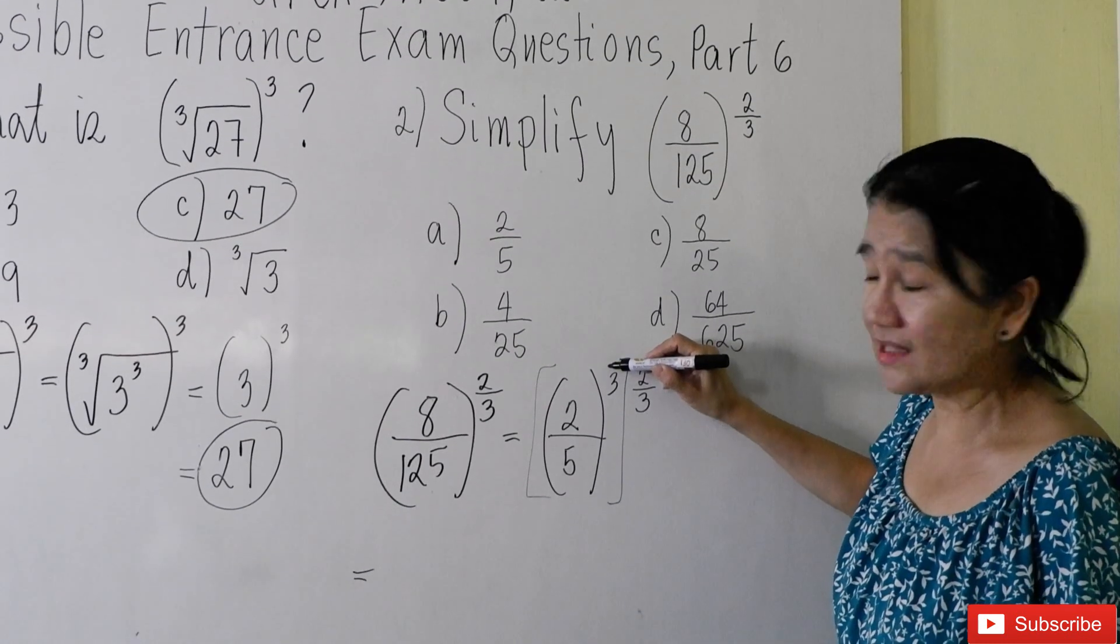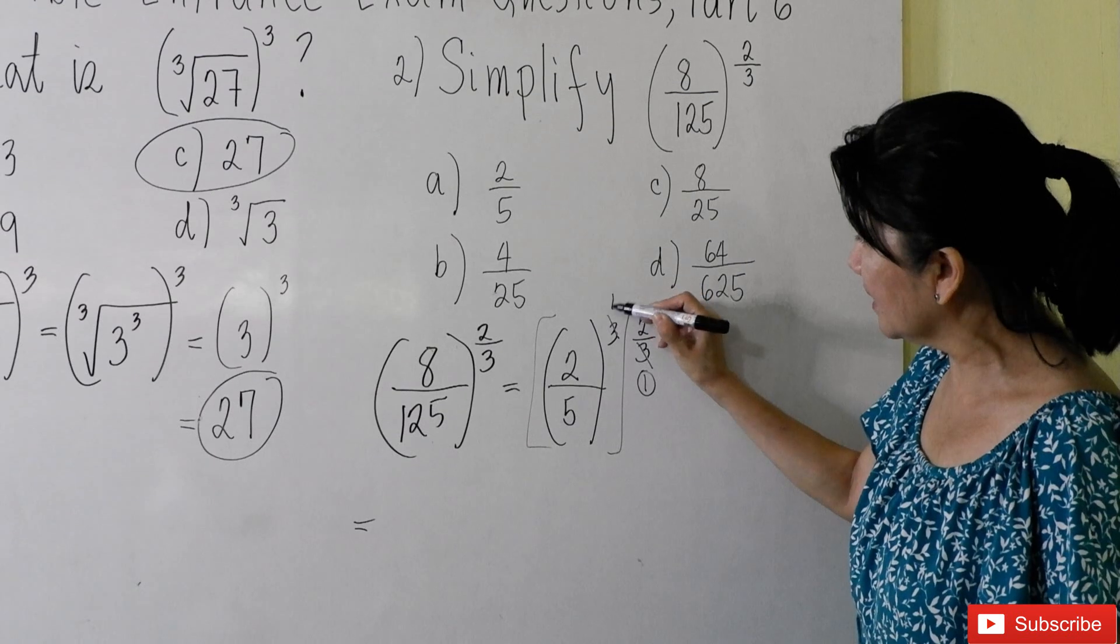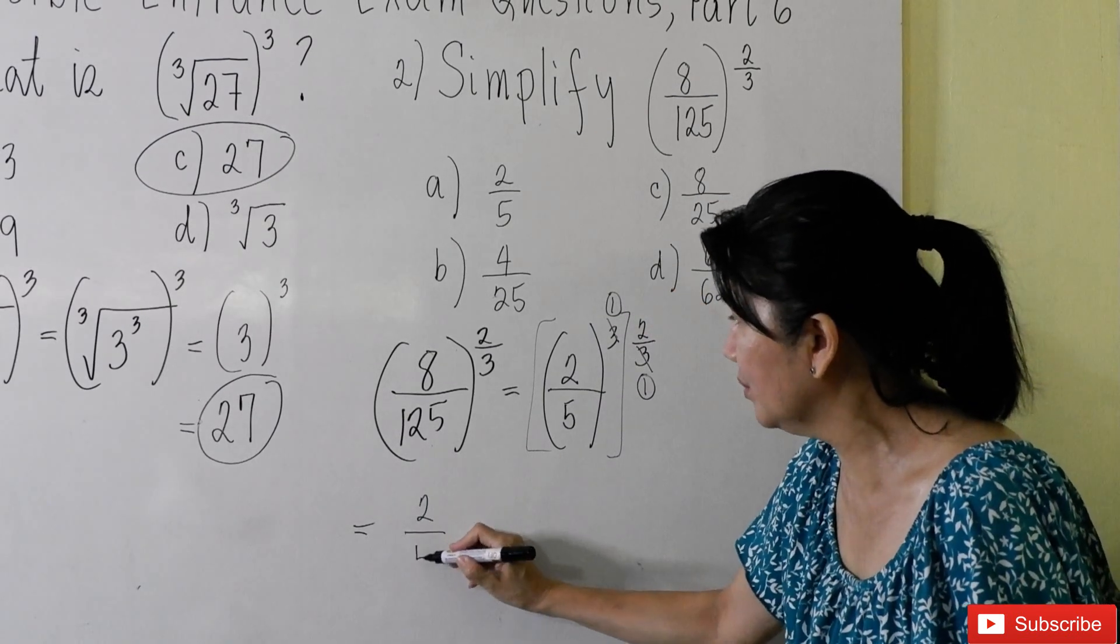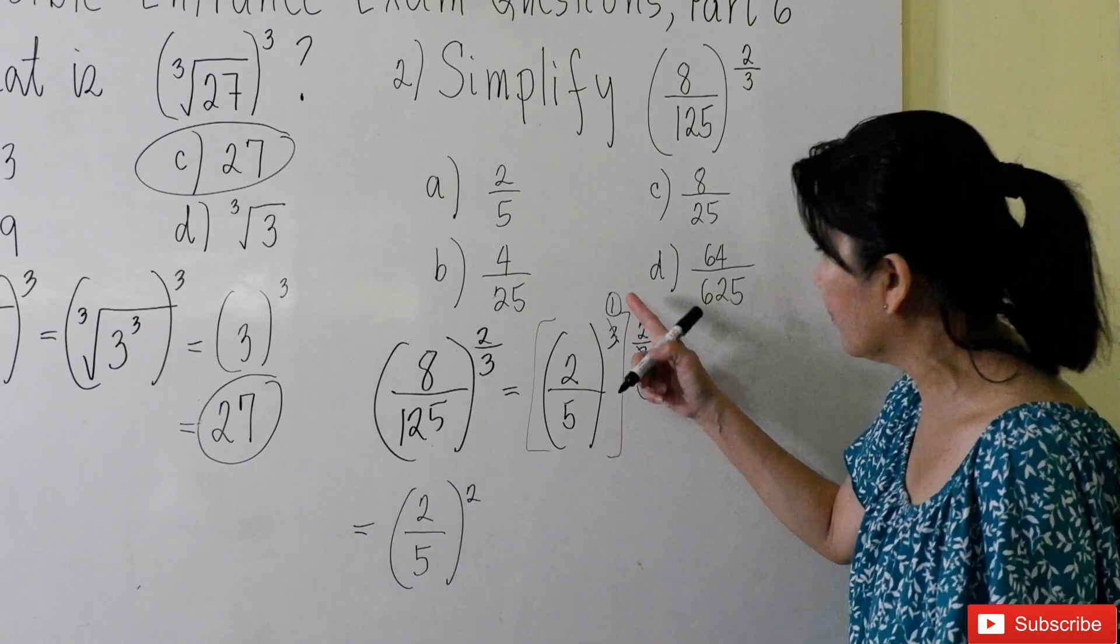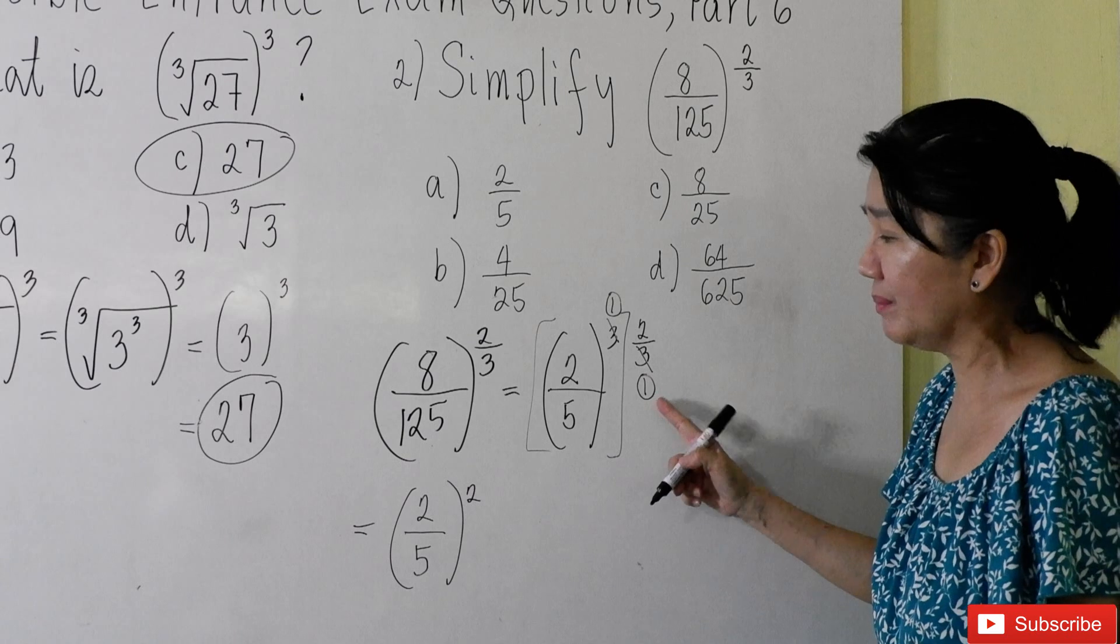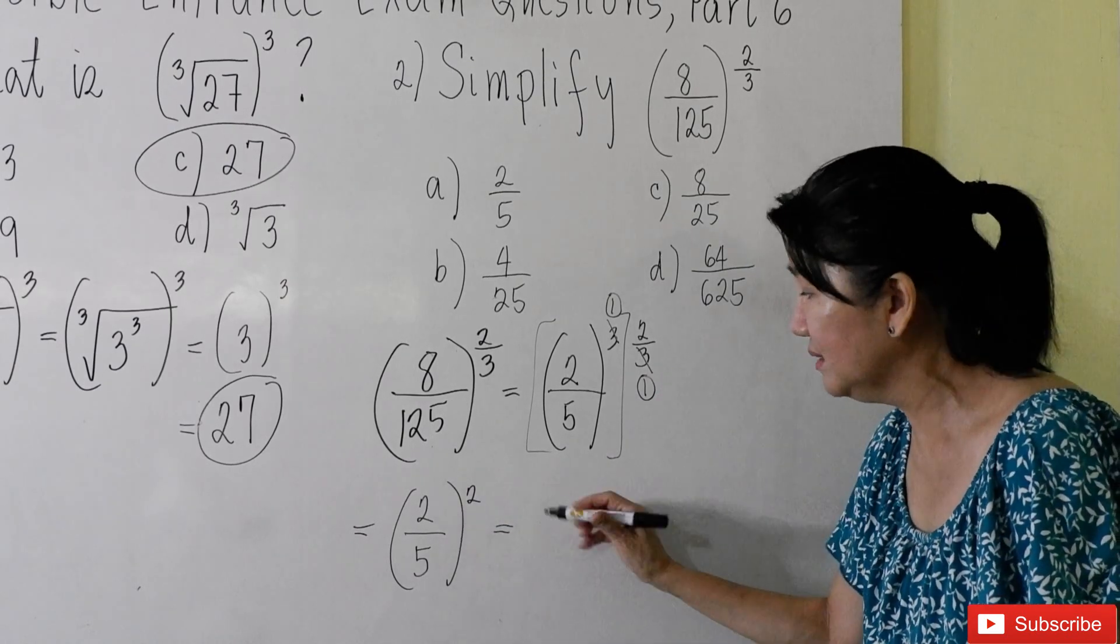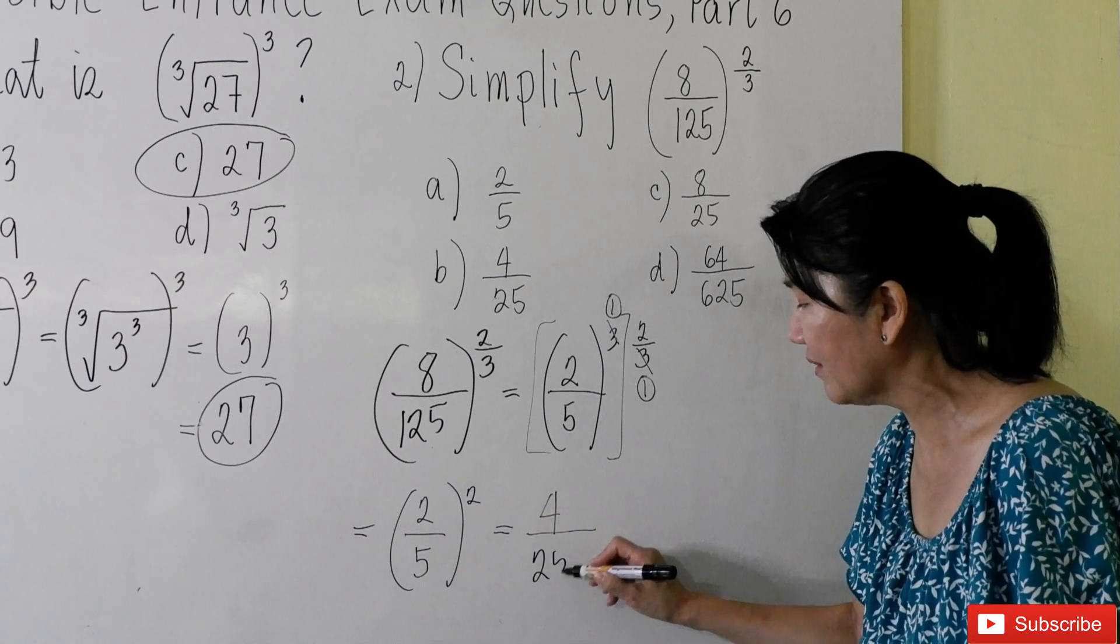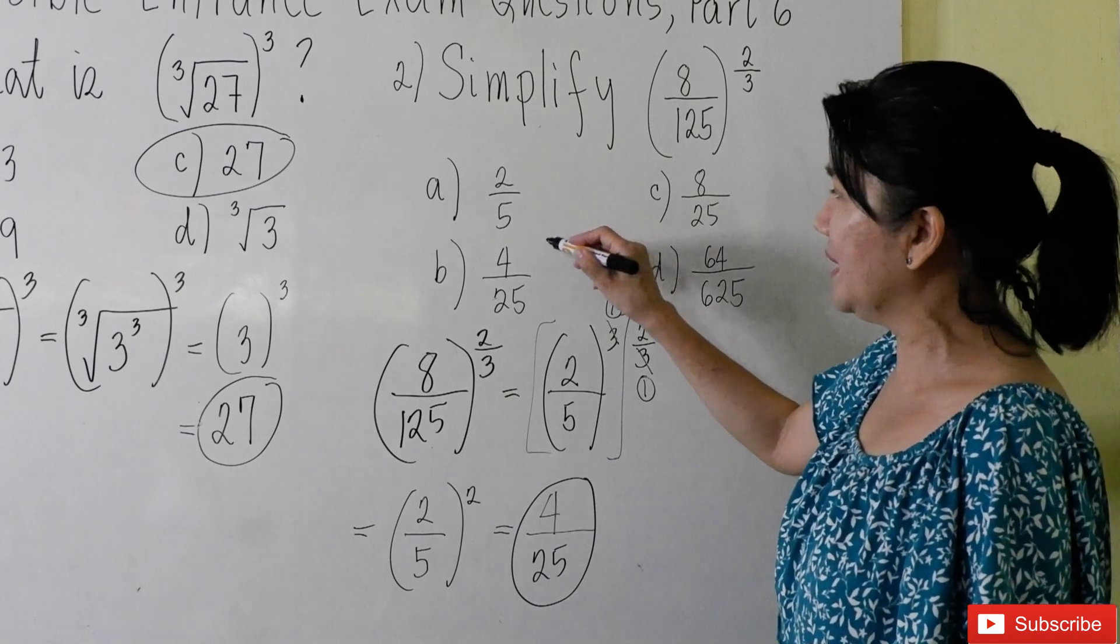Yes. We can cancel 3 and 3. It will give us a 1 and a 1 there. So therefore, we are left with 2 over 5, or 2 fifths raised to the second power. 1 times 2 is 2 divided by 1. And now we have 2 squared is 4 over 5 squared is 25. So the correct answer is letter B.